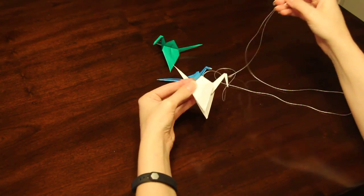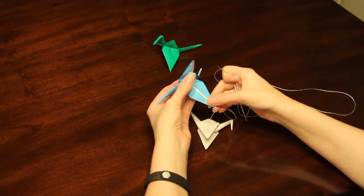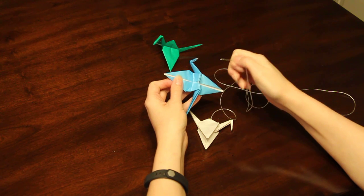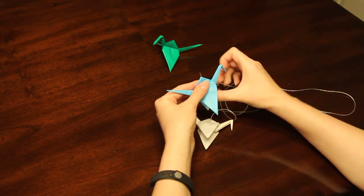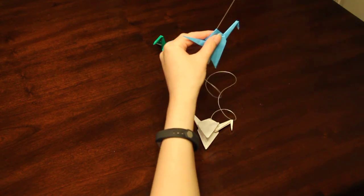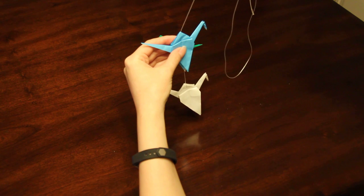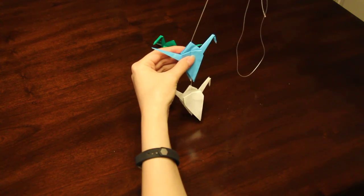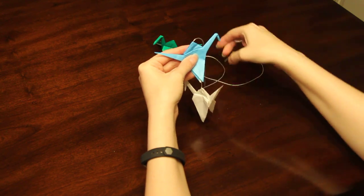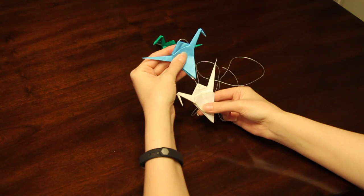Then you'll take your next crane and do the same thing - start at the bottom, look for the hole, stick it through, come up through the top, pull it through. You want to try to space your cranes somewhat evenly. A trick that I use is if you're holding the crane like this and you put the wings down, just keep the same distance between the tip of the wings and the top of the next crane.